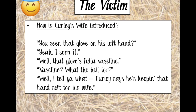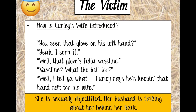So already she's a possession — she belongs to Curly. But more than that, Curly is, as we find out later in the text, not a nice guy. And he's going around talking about his wife in a kind of sexual nature to anyone he meets. So already she's portrayed as a sexual object; she's sexually objectified, and her husband's talking about her behind her back. Even before we meet her, we hear about her before we see her, and she gets painted as a certain type of person.